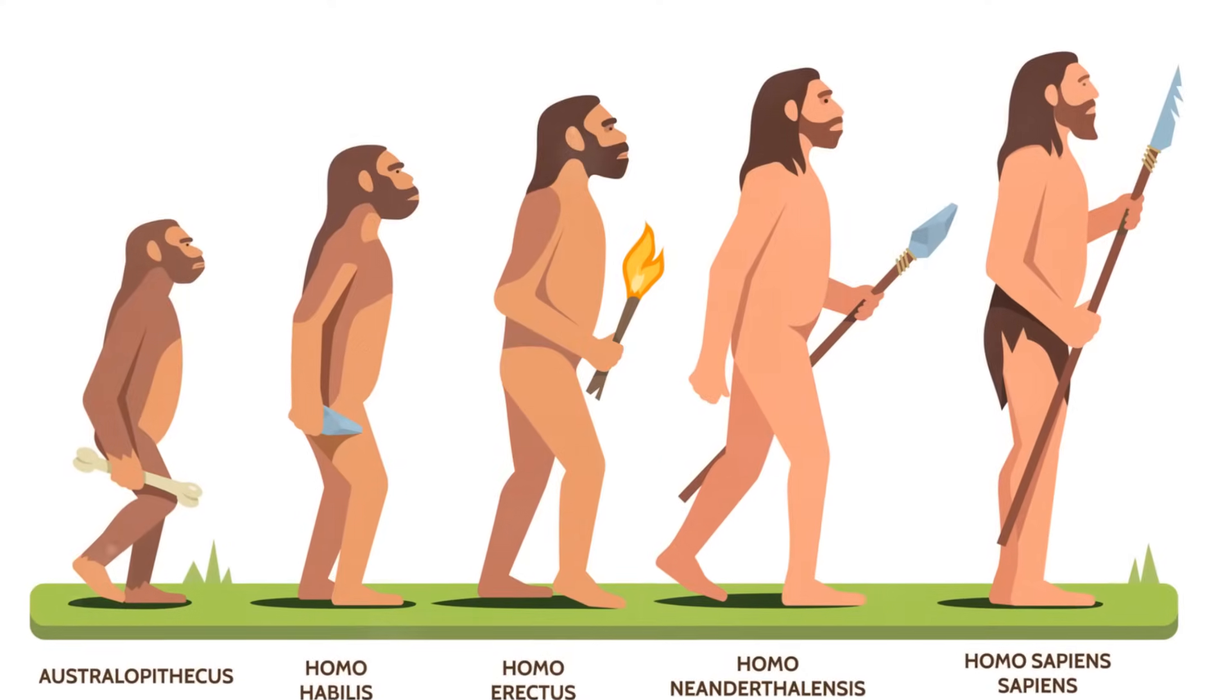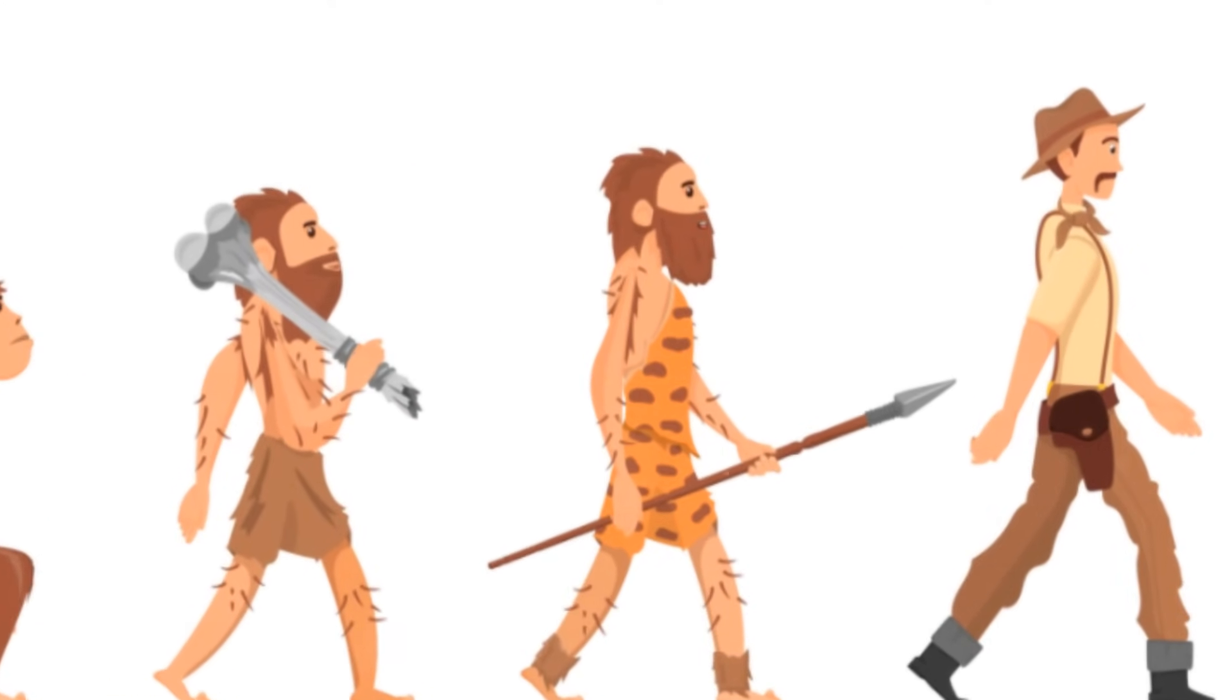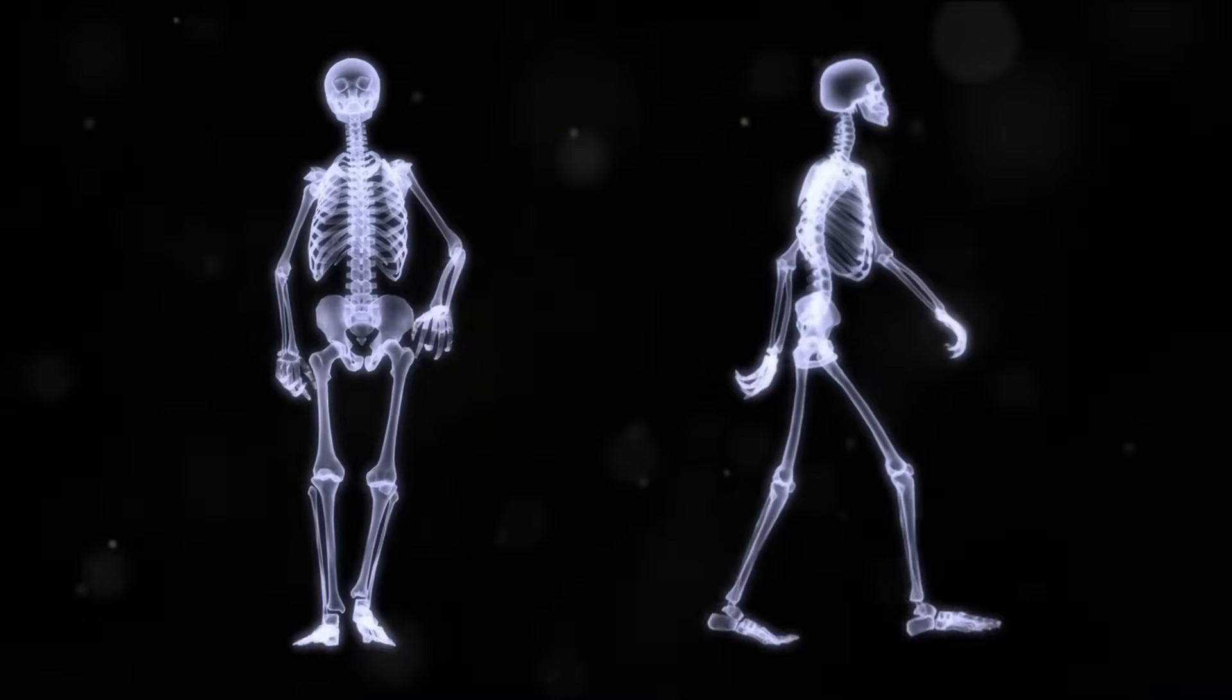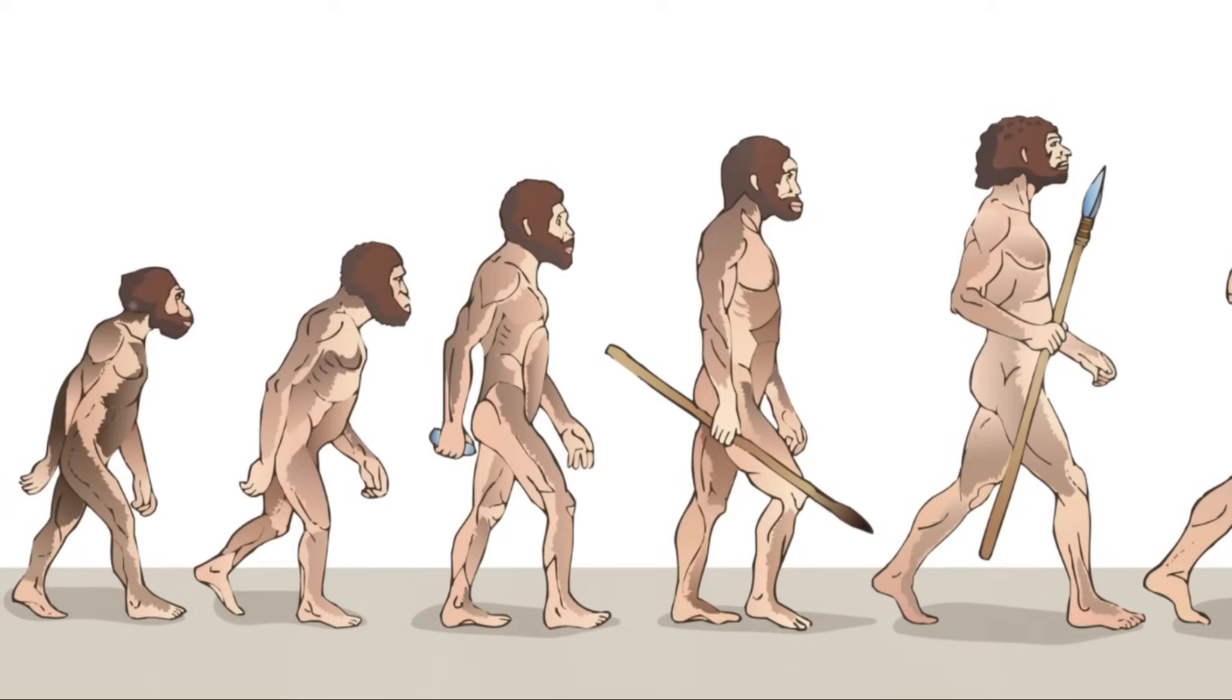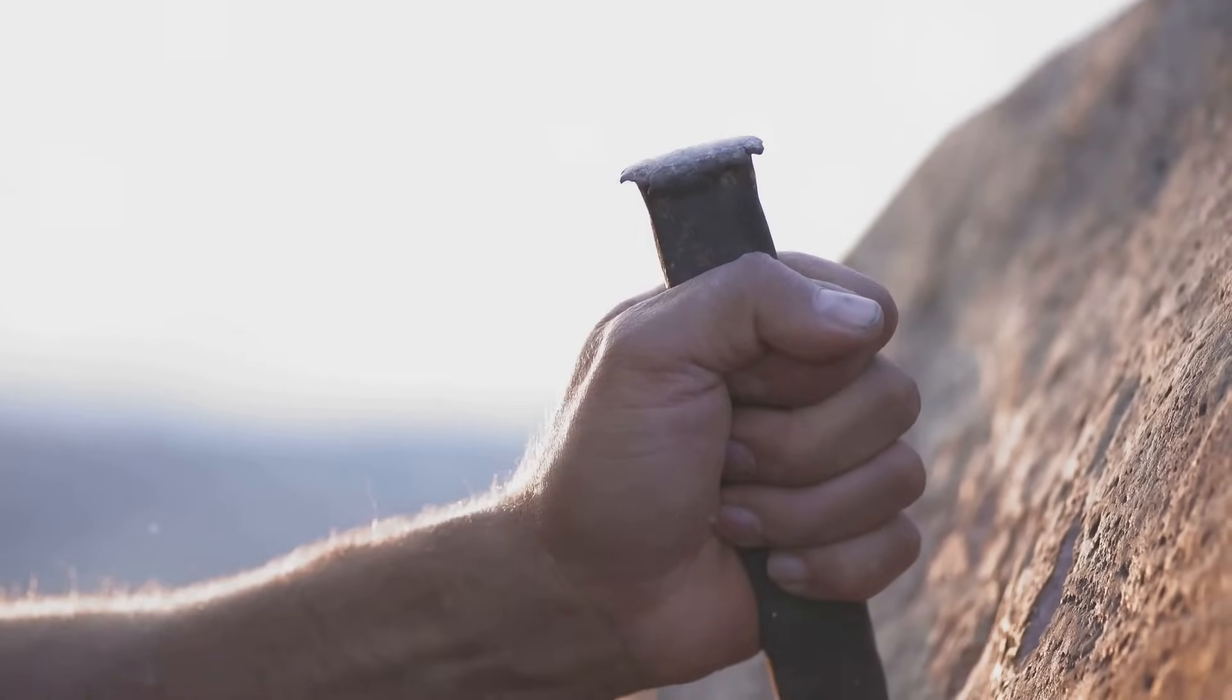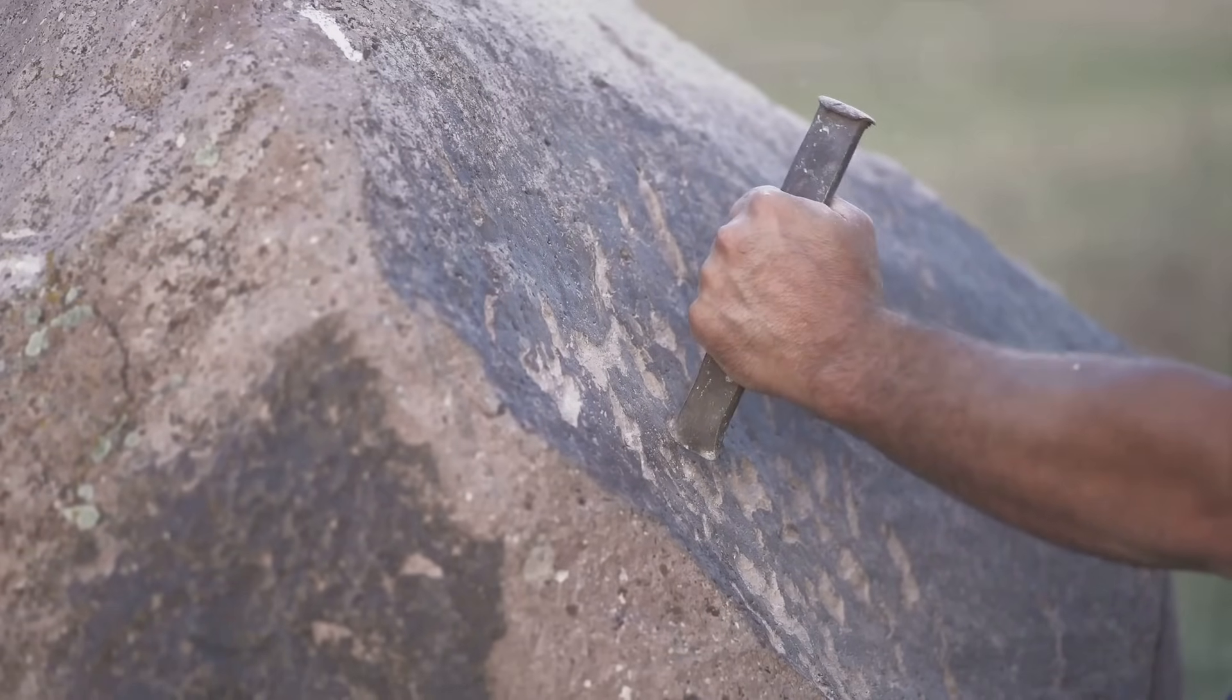Our journey begins millions of years ago with the first hominids. These early ancestors of ours, the hominids, were distinctly different from the apes they evolved from. They stood upright on two feet, a trait known as bipedalism, which marked a significant departure from our primate cousins who moved about on all fours. This shift to a bipedal stance was a game-changer. It freed up the hands, allowing for the development and use of tools, a cornerstone in the evolution of early humans.